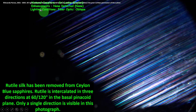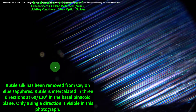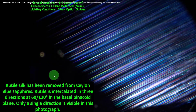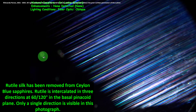Here you can see the rutile silks and some discoids. Rutile silks intercalated in three directions — 60 and 120 degrees in the basal pinacoid plane, as we talked earlier. Only a single direction is visible in this photograph. And these are NOT glassy discoids. Some people mistake them for glassy discoids and issue a certificate calling it a heated sapphire. But these are not glassy discoids — this is a natural unheated sapphire.